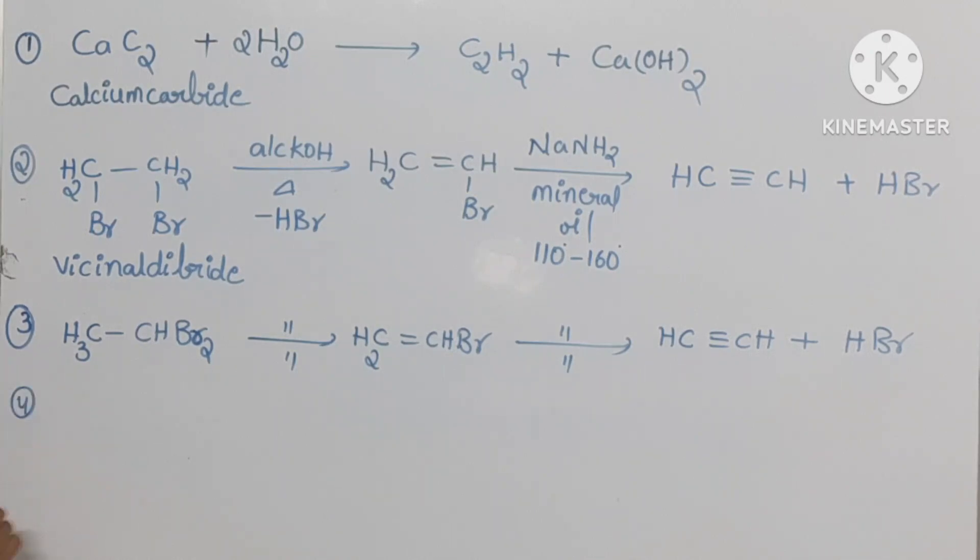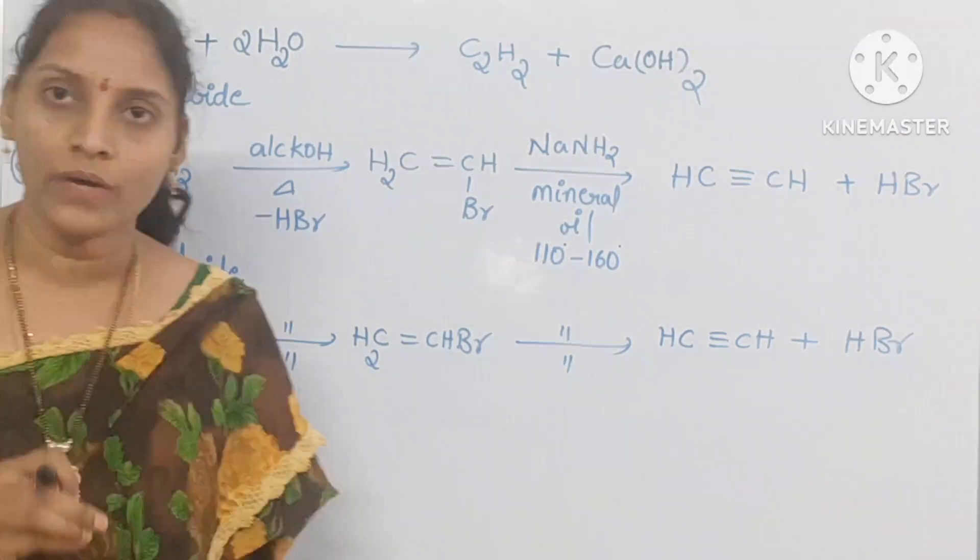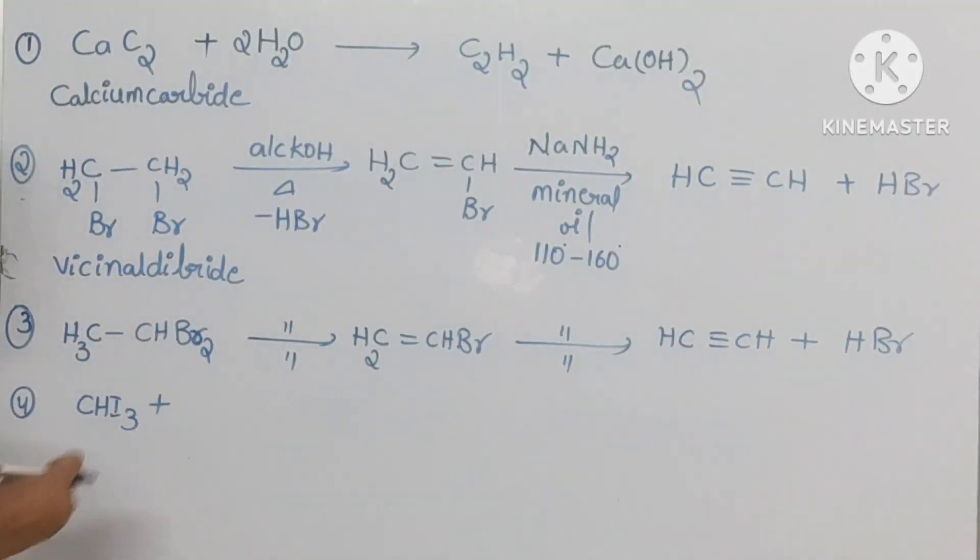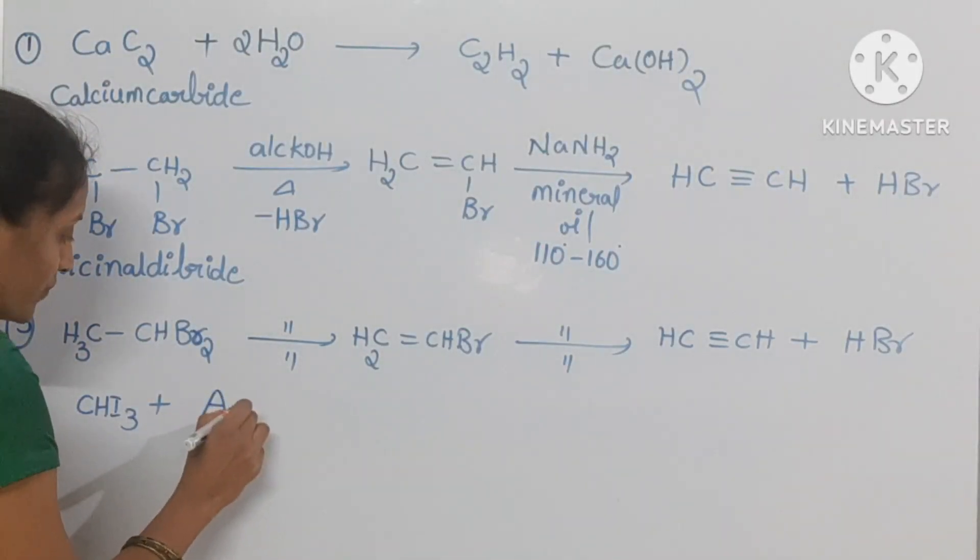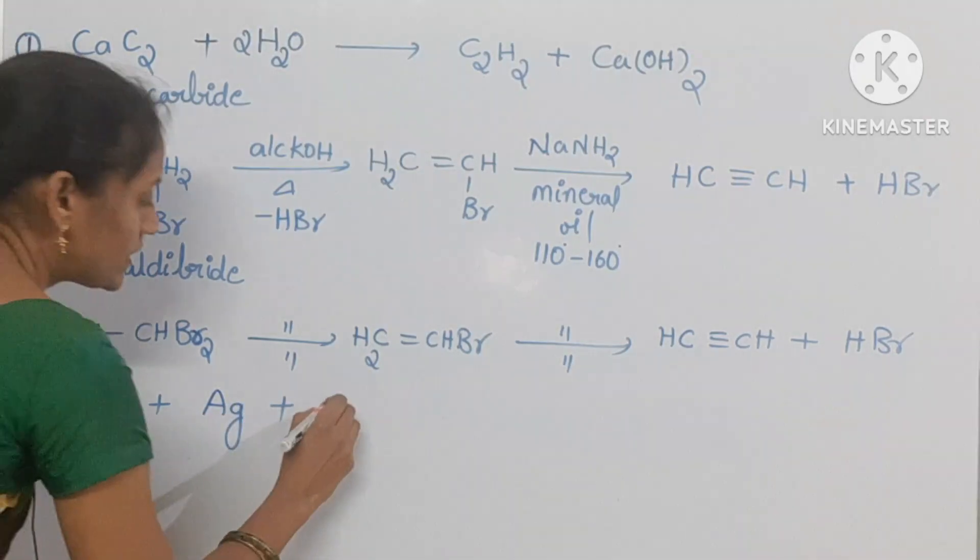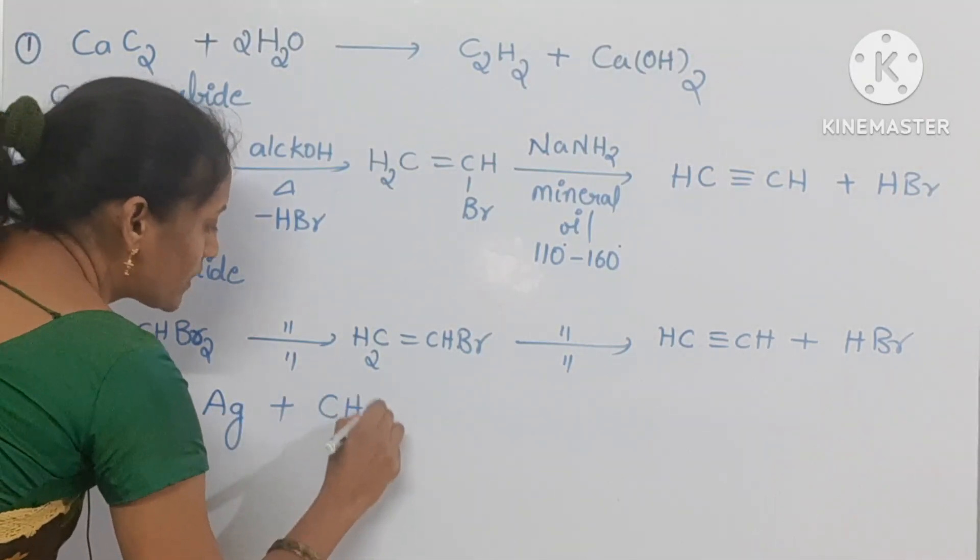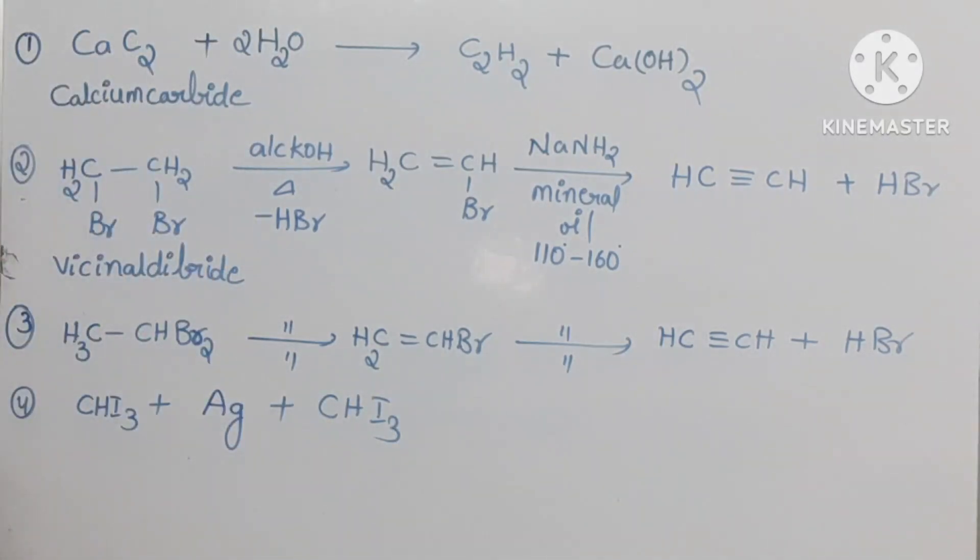And the fourth preparation method is haloform test. CHI3 plus haloform. Haloform, here I am taking iodoform. Iodoform reacting with silver metal. Here two moles of iodoform you should take. So that six moles of silver is needed. Silver is in the form of solid.